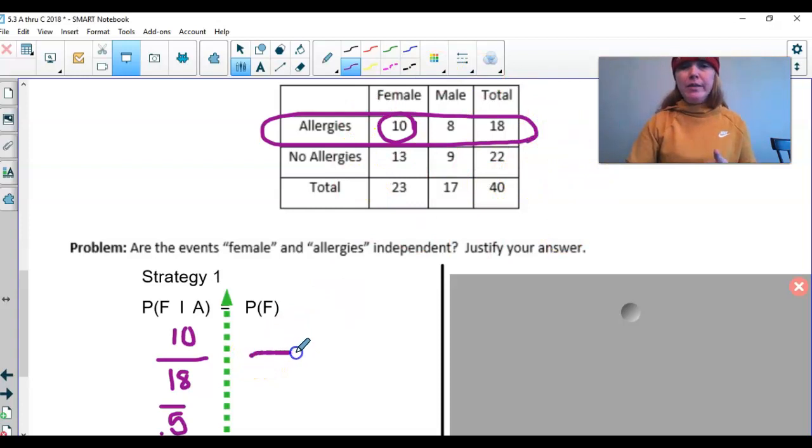Out of everyone who was sampled, there was 40 of them. How many of them were female? Well, out of everyone who was sampled with no conditions associated with it or corresponding to it or correlated with it, out of all of the 40 people, 23 of them were female.